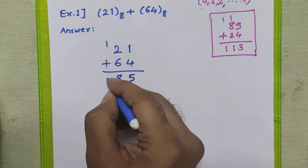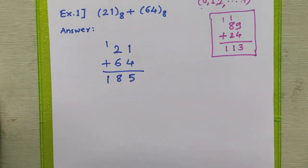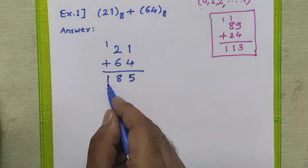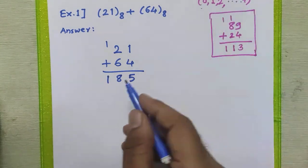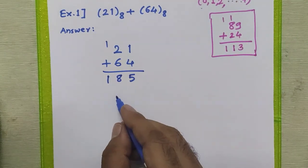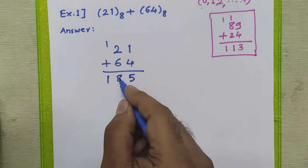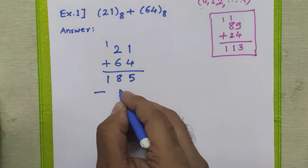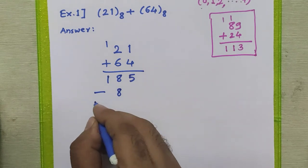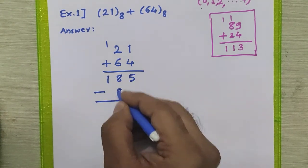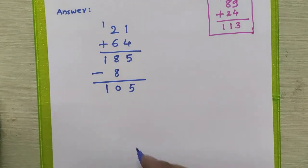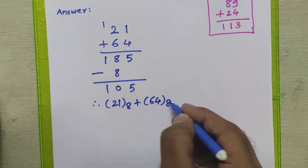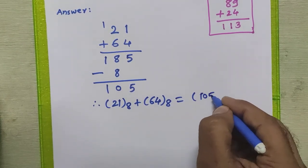The carry is placed as it is into the result. Now there is one more step: if any invalid digit appears in the result — 1 and 5 are valid, but 8 is not valid for this number system — we have to subtract the base of the number system from that invalid digit. So we subtract 8 from 8, getting 0, and write 5 and 1 as they are. Therefore, 21 octal plus 64 octal equals 105 in octal.